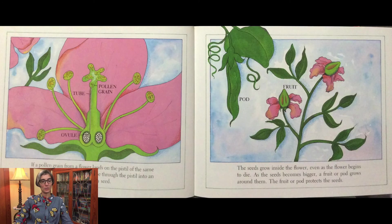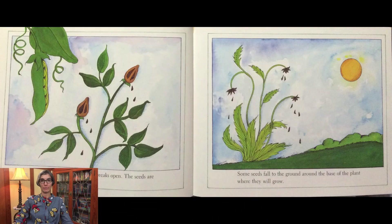If a pollen grain from a flower lands on the pistil of the same kind of flower, it grows a long tube through the pistil into an ovule. This is the beginning of a seed. The seeds grow inside the flower, even as the flower begins to die. As the seeds become bigger, a fruit or pod grows around them to protect the seed. When the fruit or pod ripens, it breaks open and the seeds are ready to become new plants.